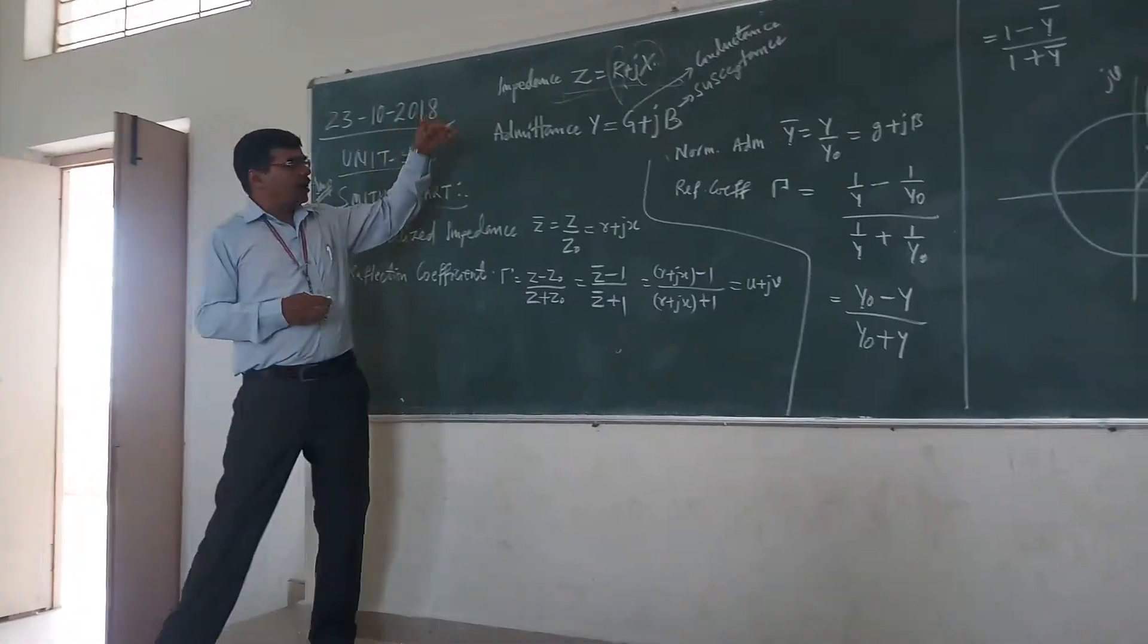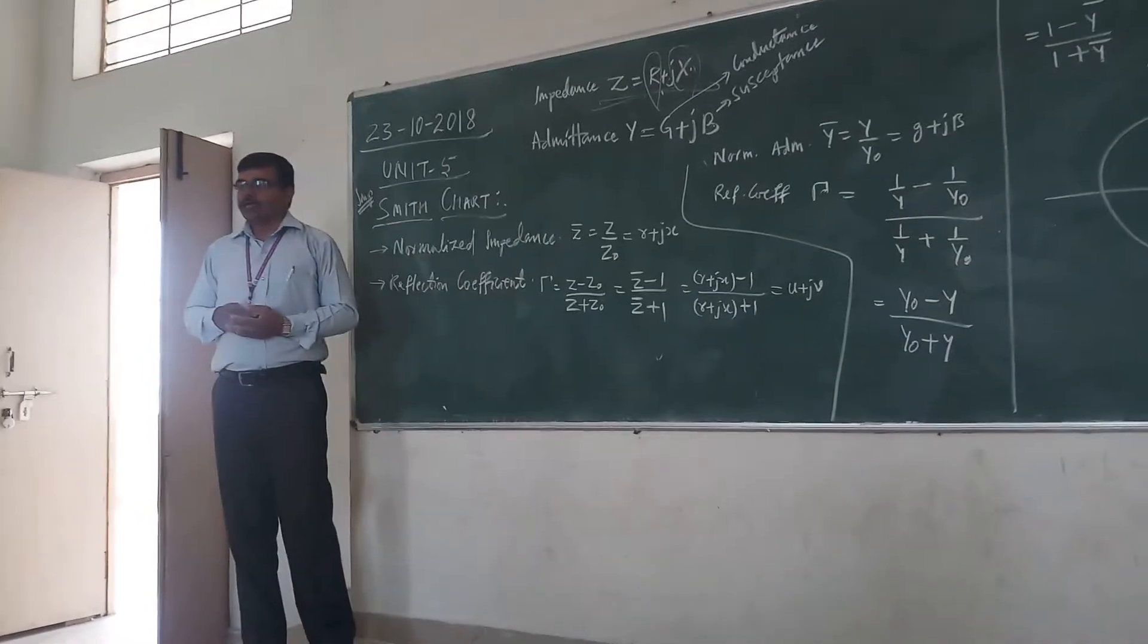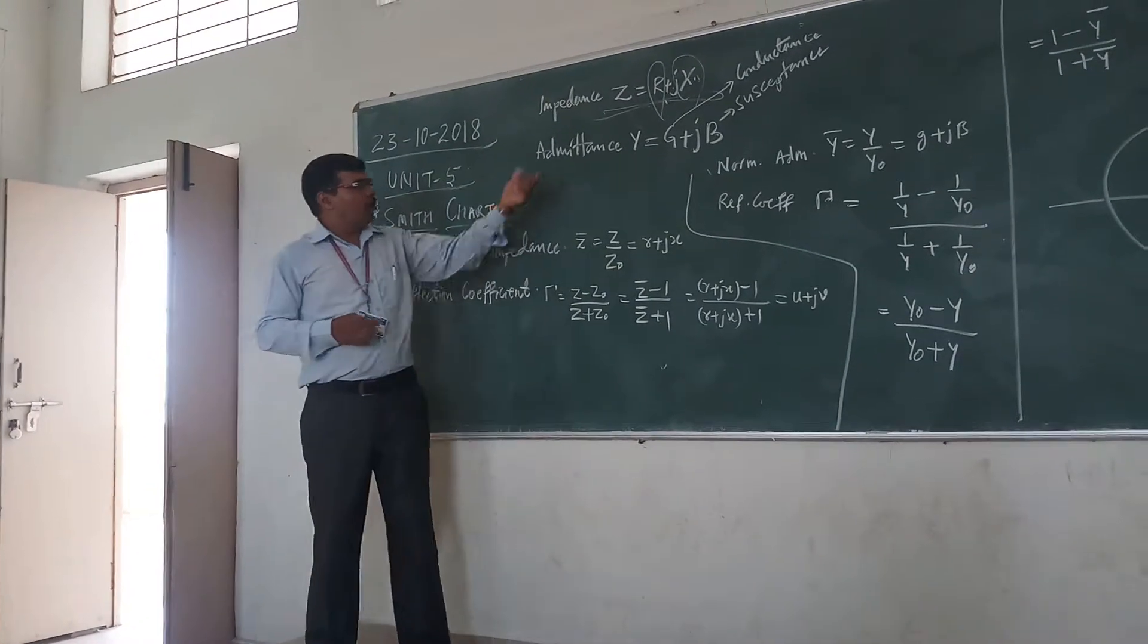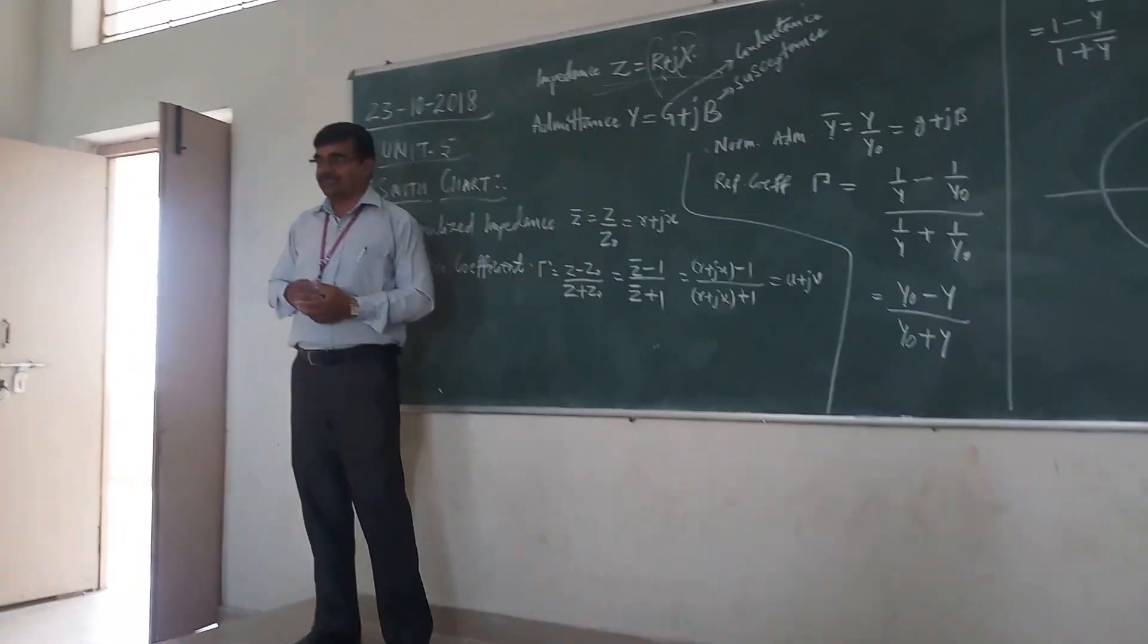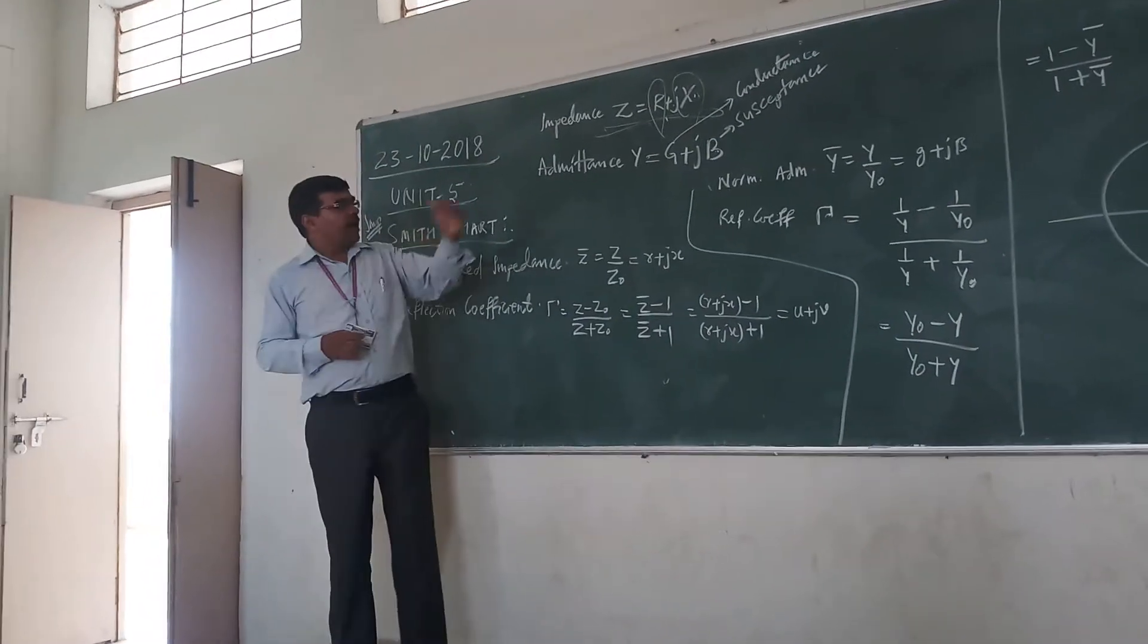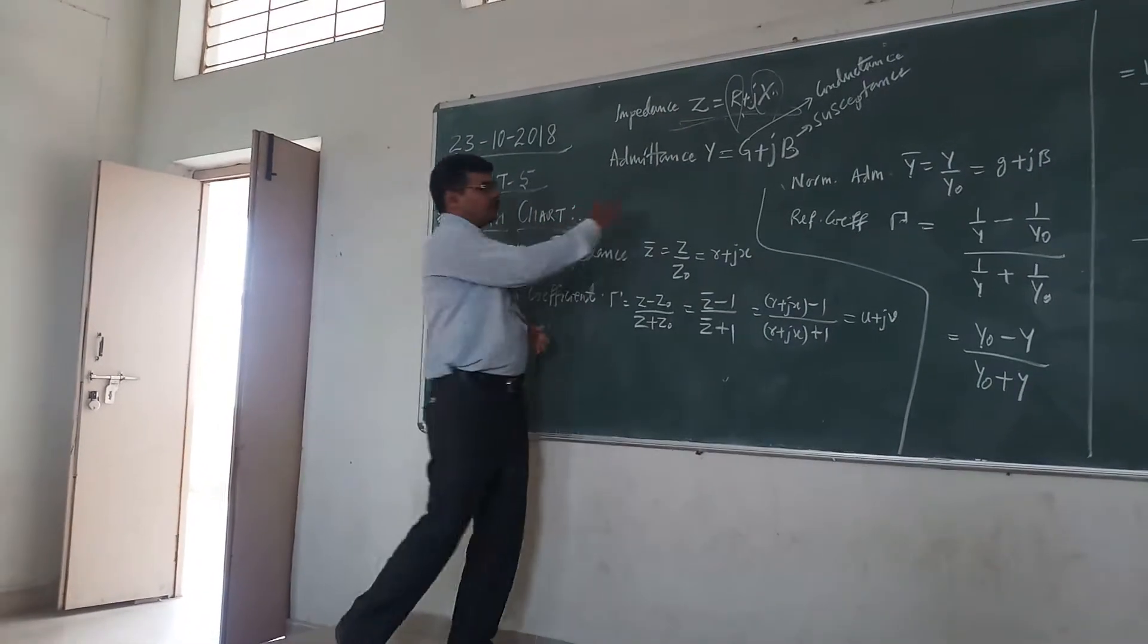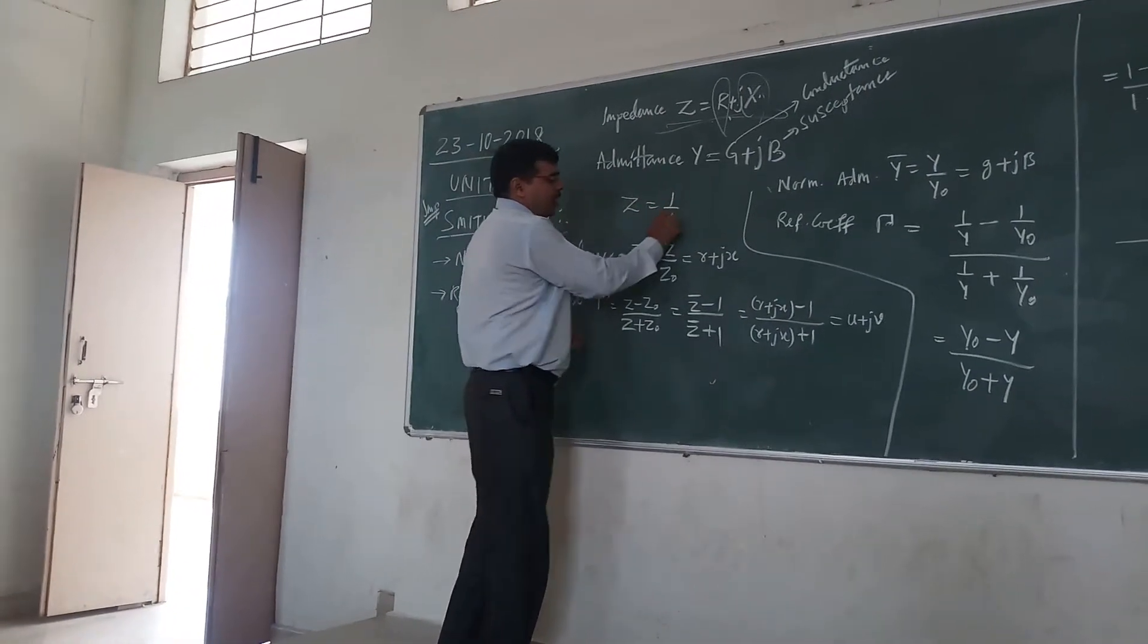If we have parallel transmission lines, then instead of working with impedance, we should focus on admittance. We know that admittance is the reciprocal of impedance. So, your Z is equal to 1 by Y.